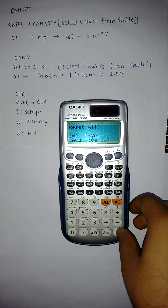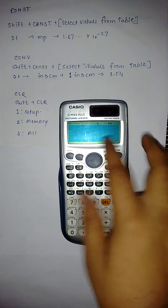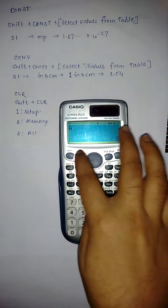Then press equal to yes and press AC. Now see, this alpha A is equal to 0, alpha B is equal to 0.